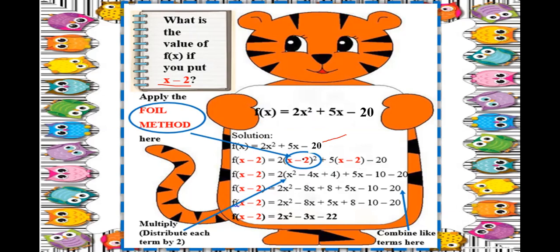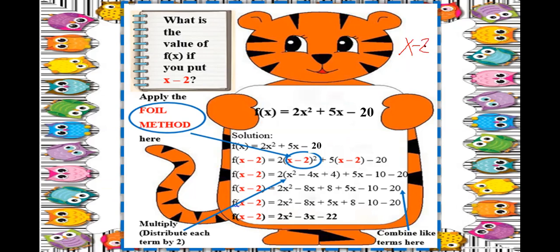For the squared term, x minus 2 squared means x minus 2 times x minus 2, so we use the FOIL method. First term times first term: x times x is x squared.